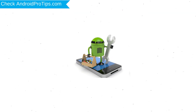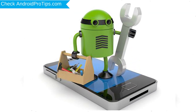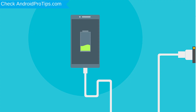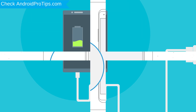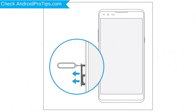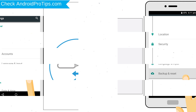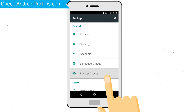Before resetting your mobile, your battery must be above 50%. Remove SD Cards and SIMs. Backup your Android mobile data if possible.